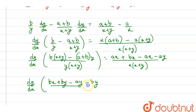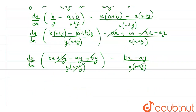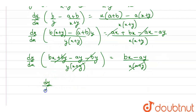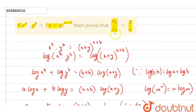On the left side, taking LCM gives dy/dx multiplied by [b(x+y) − (a+b)y] over y(x+y), which equals (bx − ay) over x(x+y). The (x+y) terms cancel from both sides. Opening the bracket: bx + by − ay − by, so the by terms cancel, leaving bx − ay. Therefore dy/dx equals (bx − ay)/y divided by (bx − ay)/x. The (bx − ay) terms cancel, giving dy/dx = y/x, which is what we had to prove.